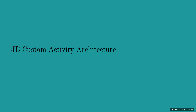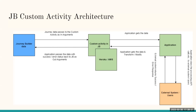Let's look at the architecture. In Journey Builder — shown in blue — you have a custom activity. Your source can be a Data Extension, an API event, or a Salesforce Data event. The data then passes to the custom activity, which is hosted in Heroku. For example, if you want to send a Viber message, the customer's mobile number and the message you want to send would pass from Journey Builder to the custom activity.